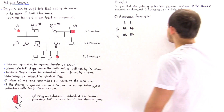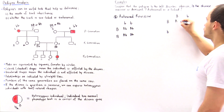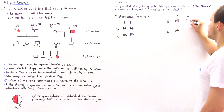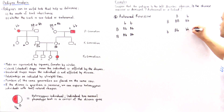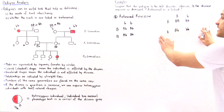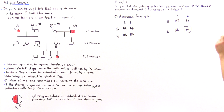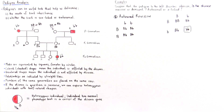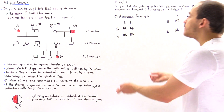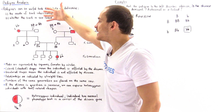Crossing the two heterozygous individuals — Bb × Bb — we produce: BB, Bb, Bb, and bb. This is consistent with the pedigree because one of the offspring expresses the disease phenotype, meaning that individual must be bb. So the autosomal recessive assumption continues to hold.